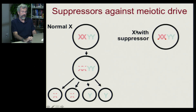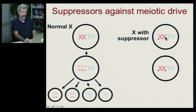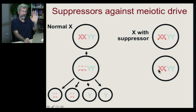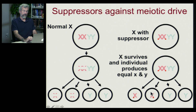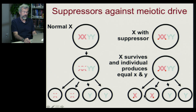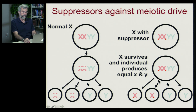Here we have an X chromosome with a suppressor gene on it. At this key phase in meiosis, the X chromosomes stand up to the Y chromosomes — they will not be broken. The X survives, and the individual can now produce equal numbers of X and Y gametes. So we have the preservation of the X chromosome defending itself against this killer Y chromosome.